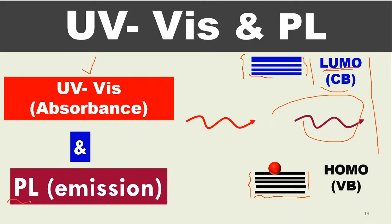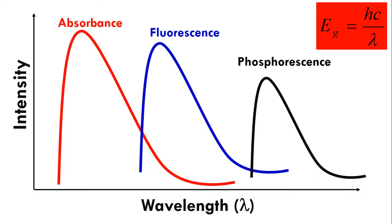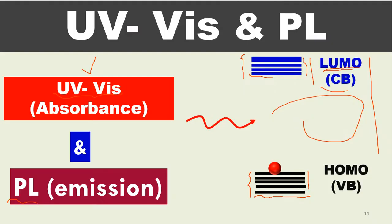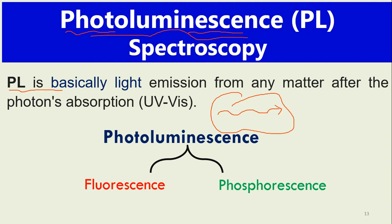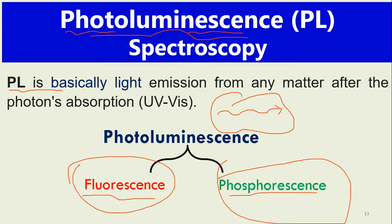Photoluminescence basically talks about emissions, whereas UV-Vis spectroscopy talks about absorptions. Photoluminescence is not a separate process — it is accompanied with the absorption process. When we shine light on a material, it absorbs light and the electron moves from a lower state to a higher state, then the electron relaxes and emits light as a photon — that we call photoluminescence. Photoluminescence is basically divided into two parts: fluorescence and phosphorescence.